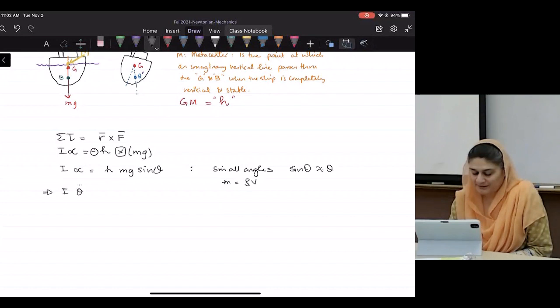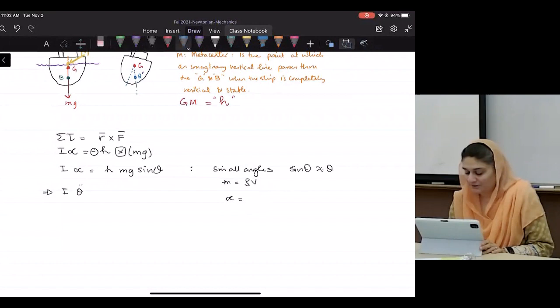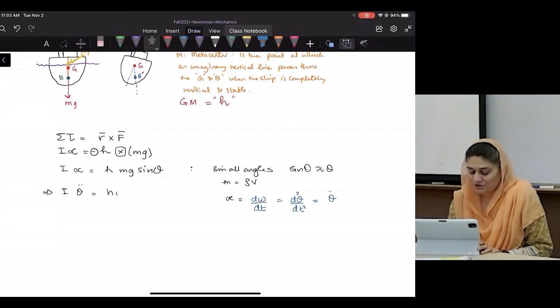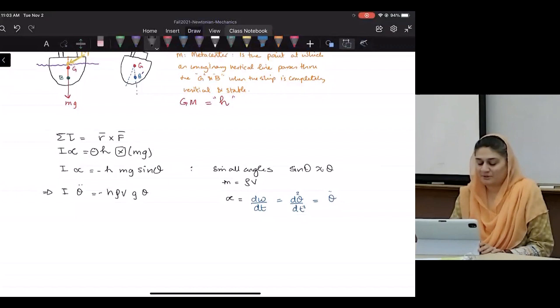Good. So then may I write this also as I theta double dot? Because alpha was defined long time ago as d omega over dt, which was d theta squared over dt squared, which I can write theta double dot equals H rho V G theta. Oh, minus. I'm forgetting minus sign.